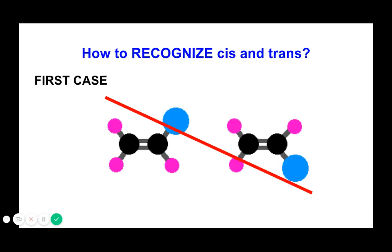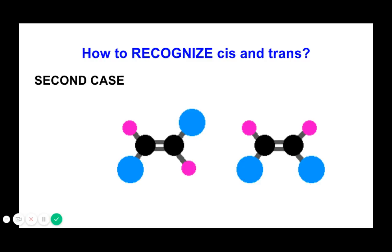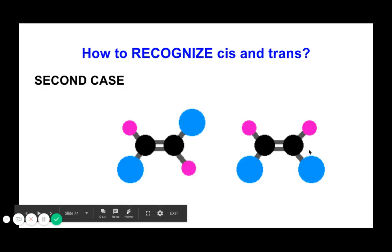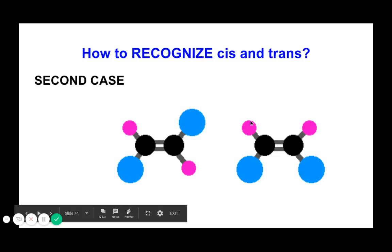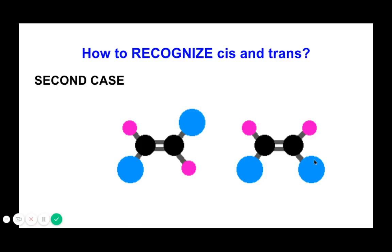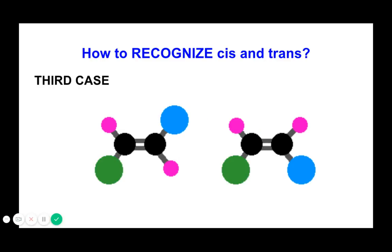The key rule for Case 1: if you see the same group on both positions of one carbon of the double bond, it is not a cis or trans compound — discard it. In Case 2, you still have C=C; on the left carbon you see purple and blue, and on the right carbon you also see purple and blue, but arranged differently. When they form an X pattern (opposite sides), that is trans; when they run parallel (same side), that is cis. Case 2 qualifies as a cis/trans compound.